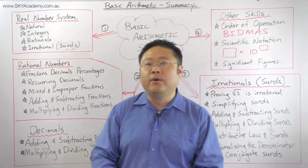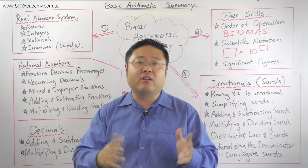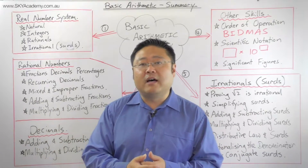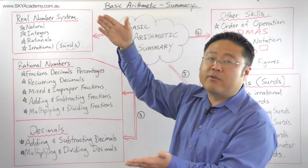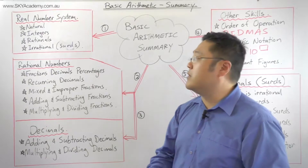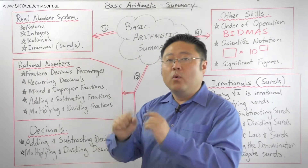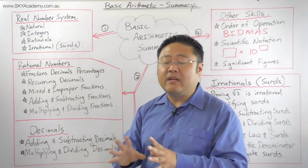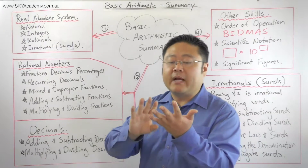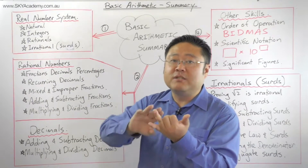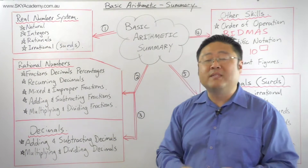Then we looked at integers. Integers are basically natural numbers that have a direction — both positive and negative. You see this on scales, for example a temperature scale with numbers above and below zero degrees. We learned to work with positive and negative integers across the four operations: addition, subtraction, multiplication, and division.